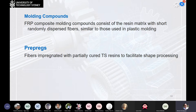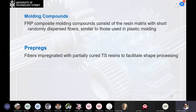Pre-pregs are fibers impregnated with partially cured thermoset resins to facilitate the shaping process. These are available as tapes, cross-ply sheets, or fabrics mixed with resins. Curing is completed during or after the shaping process. The advantage is that fabrication with continuous filaments is possible, compared to using the small chopped random filaments found in molding compounds.